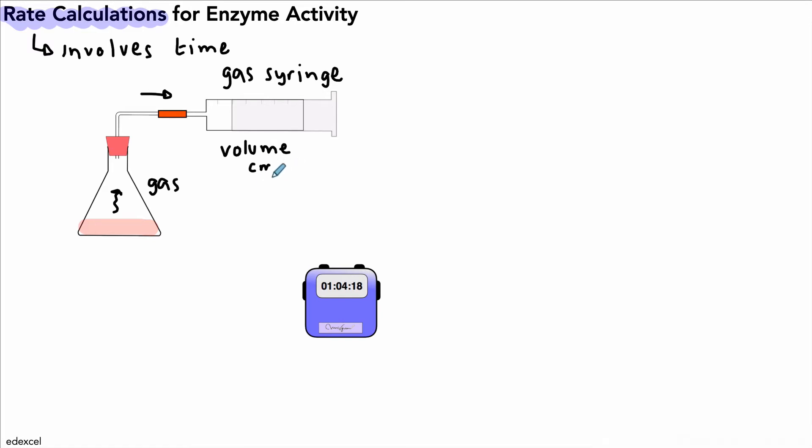So we have a measure of volume. That would usually be in centimeters cubed. And if we wanted to have a rate for this reaction, we might have a rate measured in centimeters cubed per minute. That's one example of how we might measure the rate of an enzyme controlled reaction.